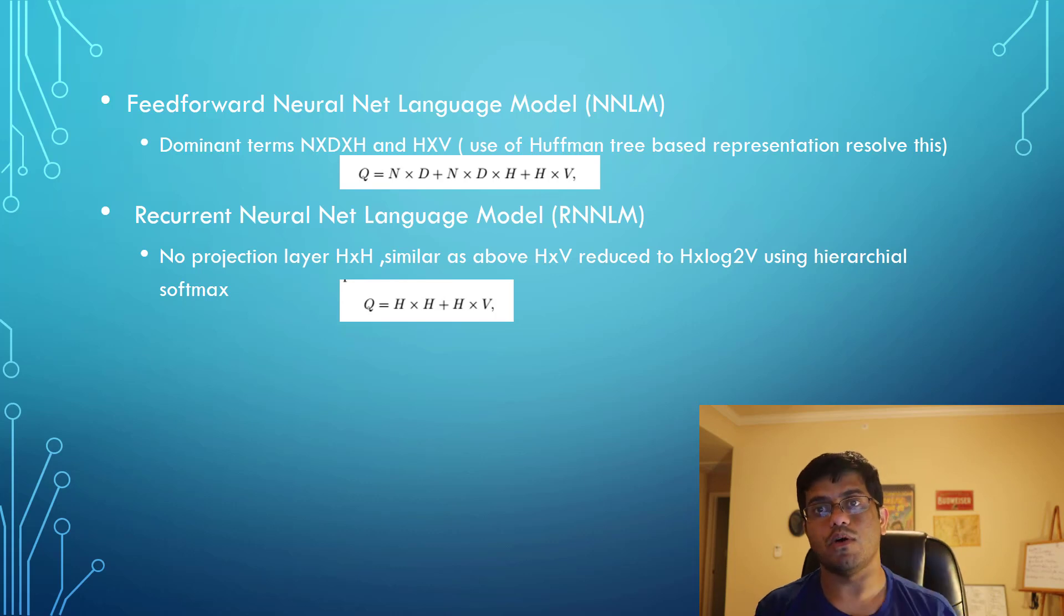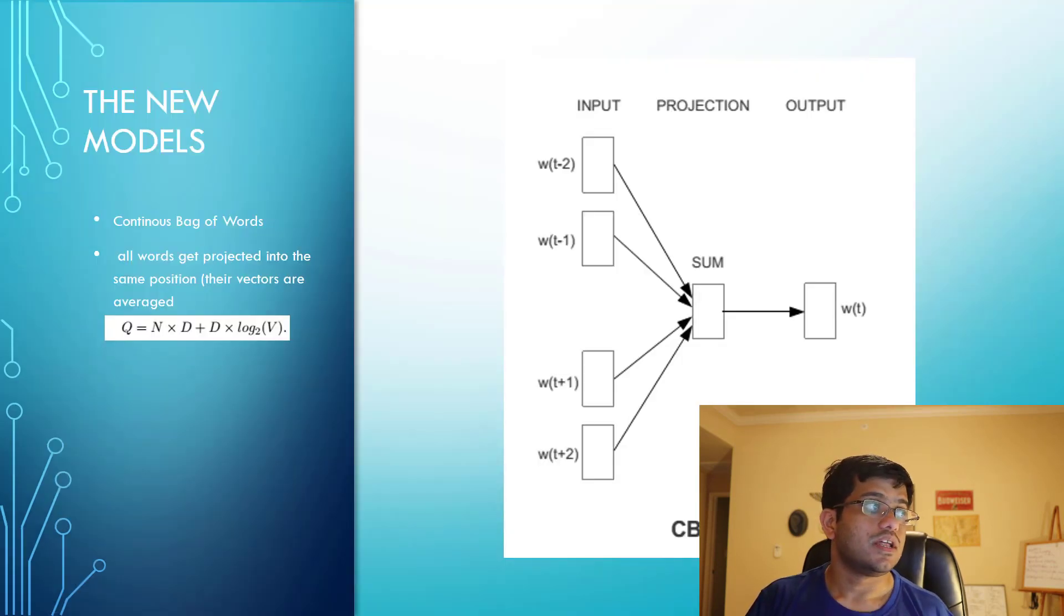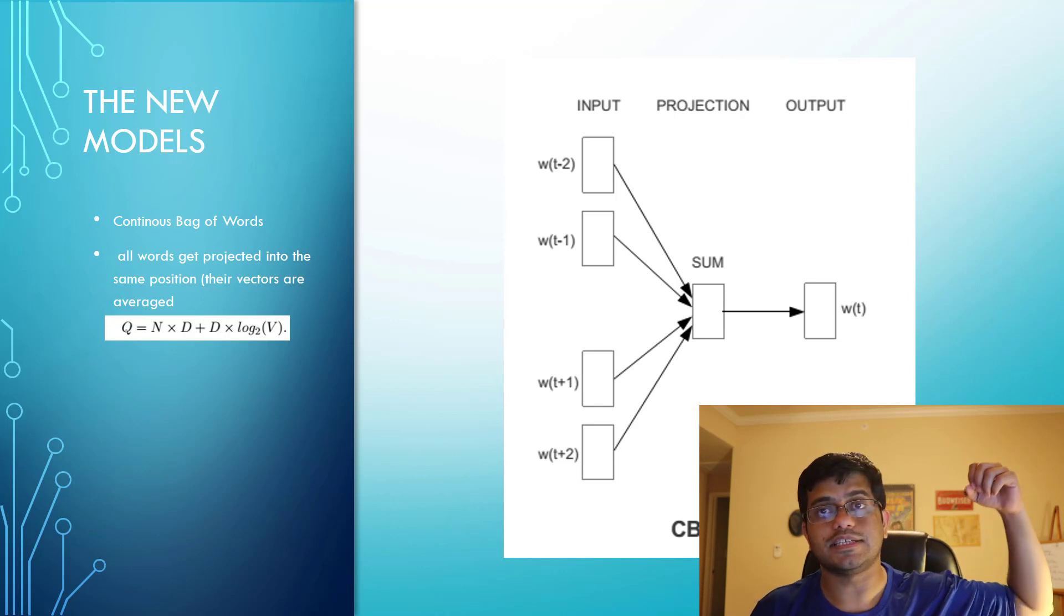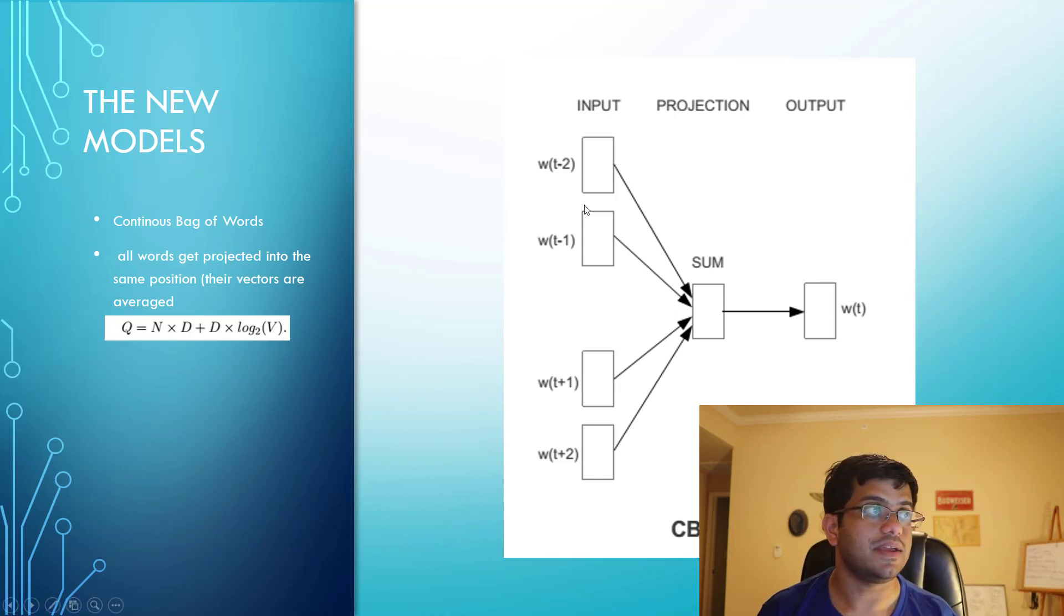The first new model proposed is continuous bag of words. In CBOW, all words get projected into the same position and the vectors are averaged. As you can see in the diagram, we take a window of words and project those vectors to get our output. The architecture is similar to the neural net language model since the projection layer is shared for all word positions.